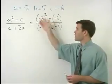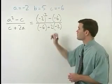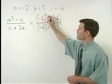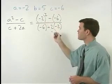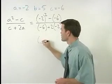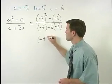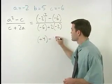So up top, if we follow our order of operations, the first thing we want to do is square this negative 2 before we subtract. So negative 2 squared is positive 4 minus a negative 6.